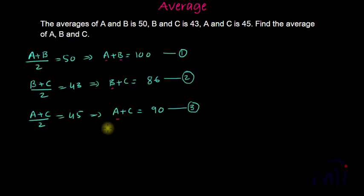So if I add equation number 1, 2 and 3, the left hand side will give me 2 times A plus B plus C is equal to 0 plus 6 plus 0, 6. 8 plus 9, 17. 7 and 1 plus 1, 2.